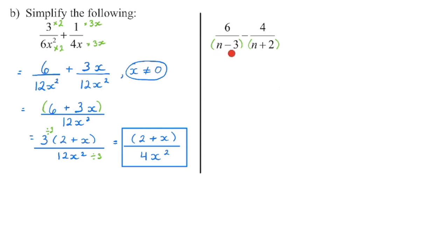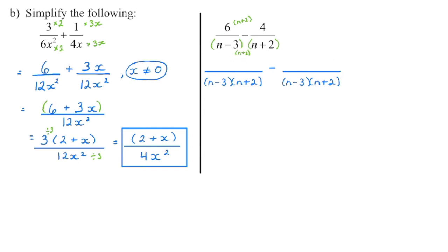Let's try another example. Step one: bracket any binomials and see if you can factor them. In this case, there is no greatest common factor and we cannot factor as a difference of squares. Step two: we need to determine the lowest common denominator — remember, binomials have to stay together. So I'm going to need one of each binomial. For the first fraction, we had a denominator of n minus 3. What did we multiply that by to get our common denominator? We can see that we multiplied by n plus 2.